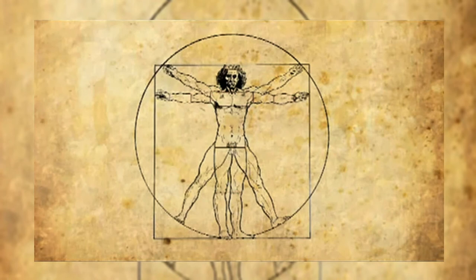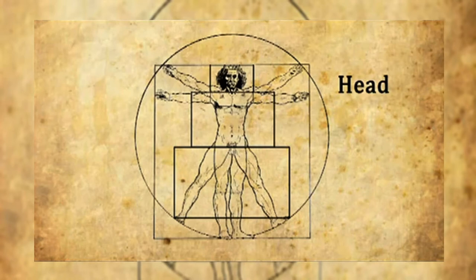In fact, there are three distinct sets: one for the head area, one for the torso, and one for the legs.